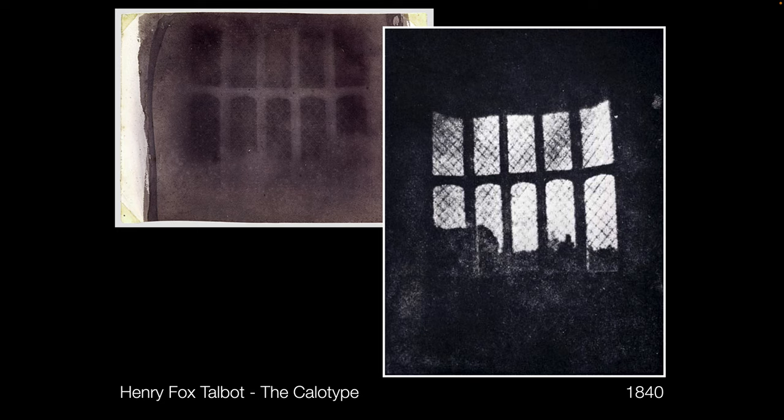So these guys are all working on this at the same time. From this point on there is a revolving door of processes — wet plate collodions, tin types, other glass plate negatives — all kinds of things just start coming in. People are thinking of and devising new ways, new substrates and structures to make photographs happen.